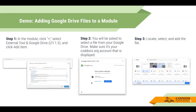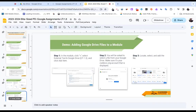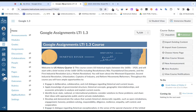To add a Google Drive file to a module, go to the module section of your Canvas course. In the module where you want to add the document, click the plus sign. Change the 'Add' dropdown from Assignments to External Tool. Look for Google Drive LTI 1.3 — not just Google Drive — Google Drive LTI 1.3. Make sure it's your csddocs.org account, hit Select File, choose the file, and add it. I'm going to go to my Canvas course as a teacher and show you what this looks like.